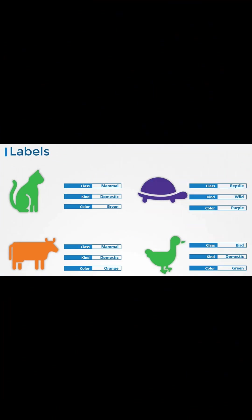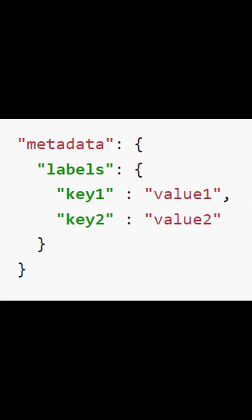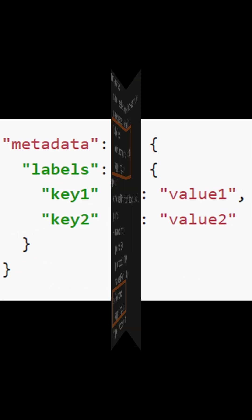Labels are the key-value pairs which are attached to pods, replication controllers, and services. They are used as identifying attributes or modified at runtime.